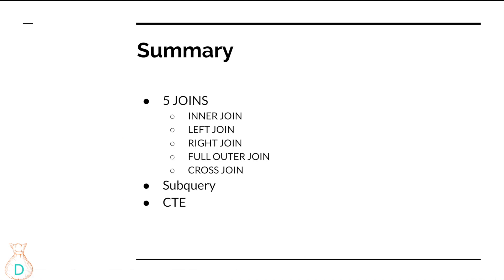To recap: we talked about the five main joins — inner join is the fastest but left join is most commonly used because you don't want to lose information from your main table. We talked about subqueries, which are smaller Lego blocks plugged into bigger ones. We also talked about CTEs, which are essentially subqueries you name for reuse. Ultimately, when used only once, it's more of a personal preference — some people prefer WITH statements, others prefer subqueries.